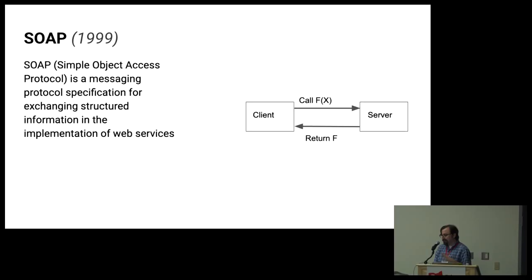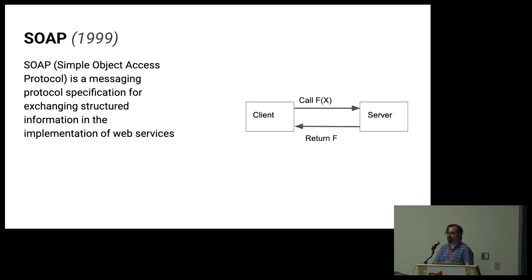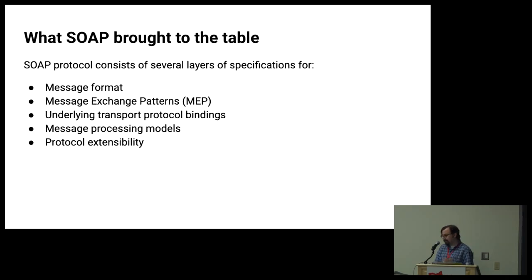Around 1999, what really started changing the tech world was the SOAP protocol — a messaging protocol with specifications for exchanging structured information. This was one of the most important divergences away from RPC patterns. What SOAP brought to the table was a solid messaging format, message exchange patterns, an underlying transport protocol, message processing models, and protocol extensibility.